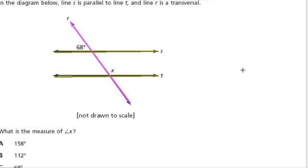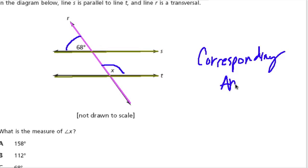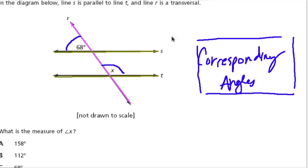So here's angle x. They give us this angle of 68 degrees. First, I think about corresponding angles, and that just means angles that are in the same position at the intersection. So 68 degrees and this angle right here are in the same position—they're in the upper left-hand corner at the intersection.